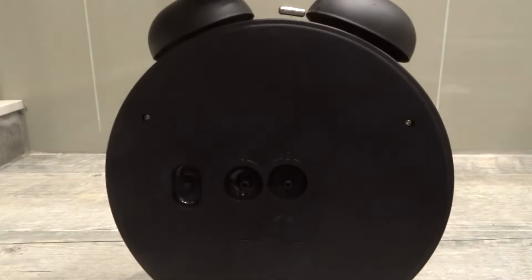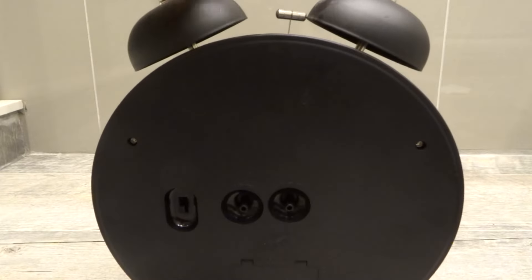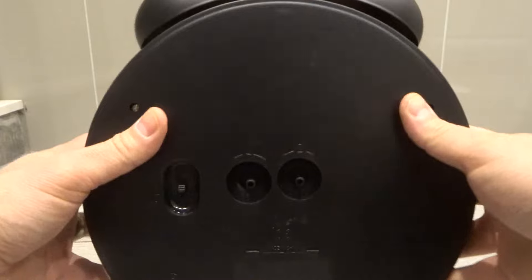The first thing you want to do is turn it around and take a look at the back of it. Obviously all analog clocks are going to be slightly different, but for the most part they're going to be very similar.